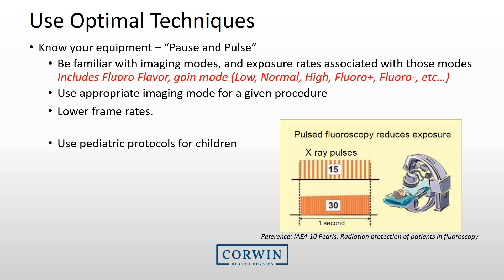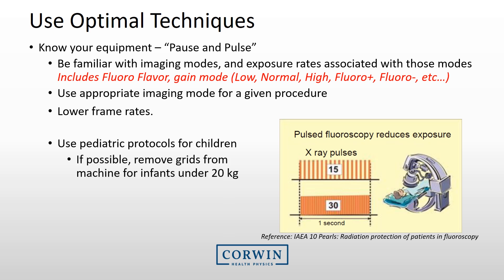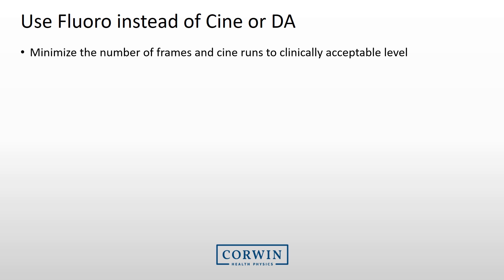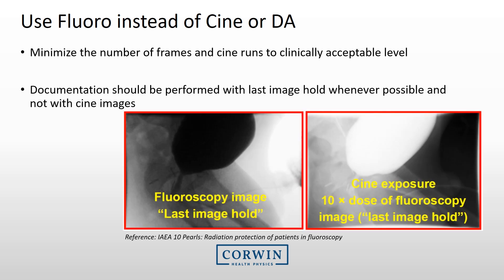Use pediatric protocols when children are imaged, including lower frame rates and increased filtration. For children under 20 kg, it is recommended that the grid be removed and an air gap technique be used instead. When acquiring images, minimize the number of digital acquisitions and cine runs to a clinically acceptable level. Cine and digital acquisitions can have exposures 10 to 100 times greater than fluoroscopy, so whenever possible use the fluoroscopic last image hold instead.